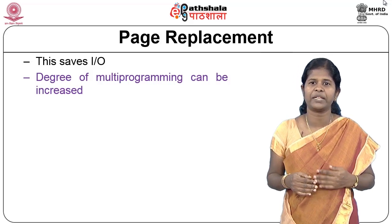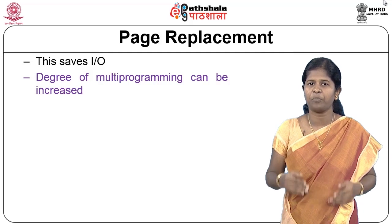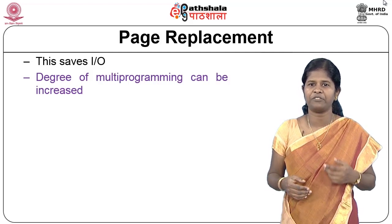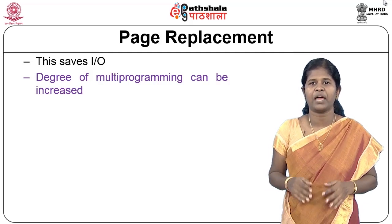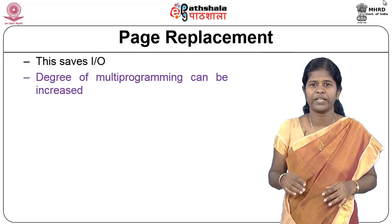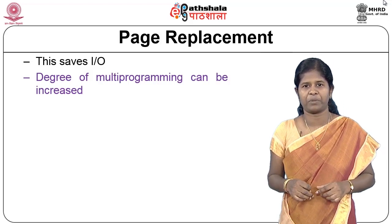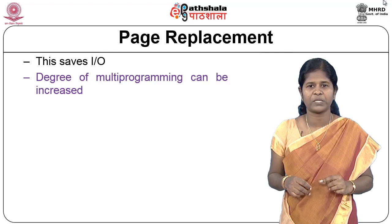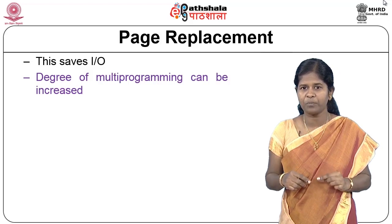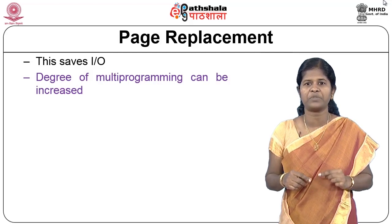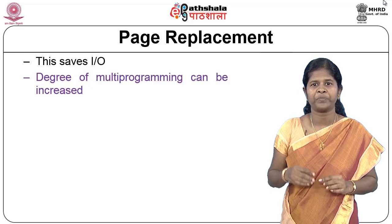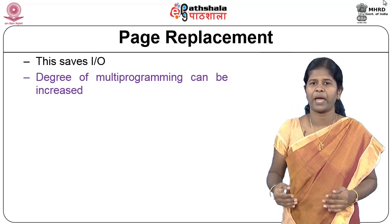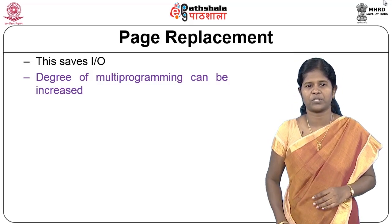The degree of multiprogramming is the number of processes that can be kept in the physical memory at a particular time. Because one process occupies fewer physical frames in the physical memory, the remaining space can be utilized by other processes.